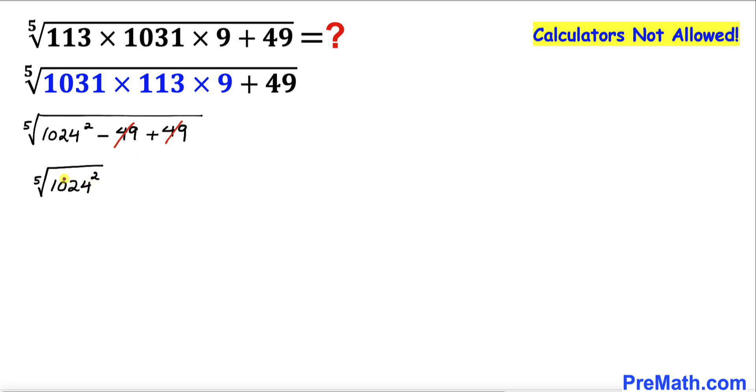Now let's focus on this base 1024. We know that 1024 is the same as 2 to the power 10. Let's take the square on both sides.